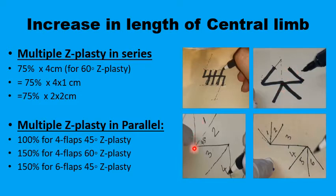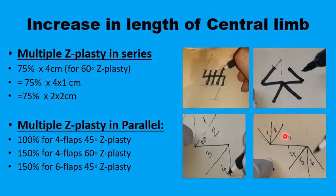If you want more extension in the central limb than the classic z-plasty can offer, a four-flap z-plasty with 45 degrees each gives almost 100 percent increase in the length of the central limb. For even more extension, you can use six flaps with 45-degree angles, or four flaps with 120 degrees divided into 2 times 60 degrees, achieving more than 150 percent increase in the length of the central limb — something not achievable with the classic two-flap z-plasty.